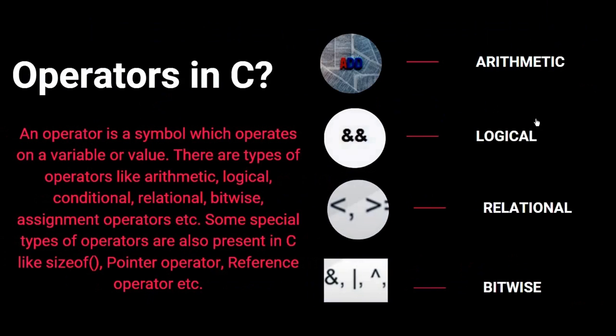An operator is a symbol which operates on a variable or a value. There are different types: the arithmetic operator, which consists of addition, subtraction, multiplication, and modulo division. Then the logical operations, which consist of AND, OR, NOT, and XOR operations.